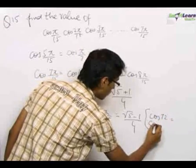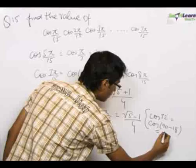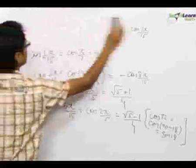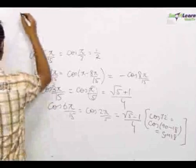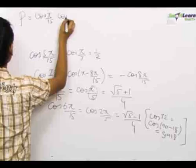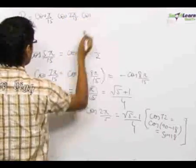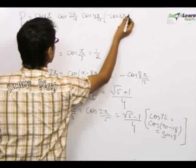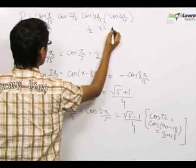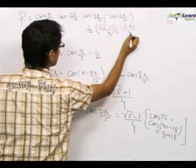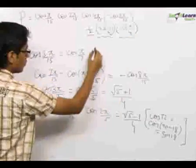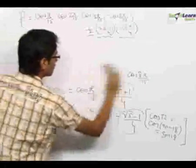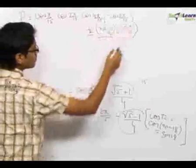So our product gets converted into cos(π/15) · cos(2π/15) · cos(4π/15) · [−cos(8π/15)] · (1/2) · (√5 − 1)/4 · (√5 + 1)/4. Now (√5 − 1)(√5 + 1) = 5 − 1 = 4, which cancels with the denominator 4.